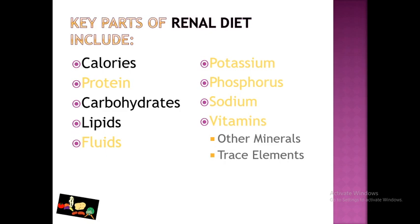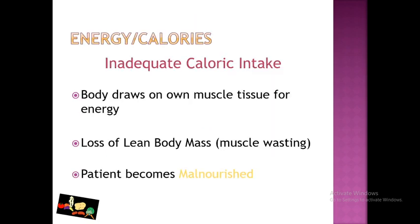Key parts of renal diet include calories, protein, carbohydrates, lipids, fluids, potassium, phosphorus, sodium, vitamins, and other minerals. All the main macronutrients and micronutrients are included. Protein, carbohydrates, and lipids are the macronutrients, along with energy and calories.